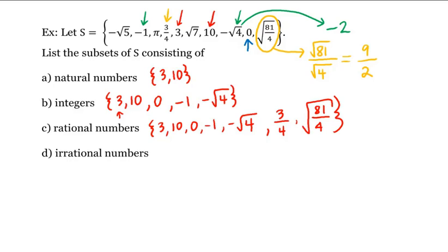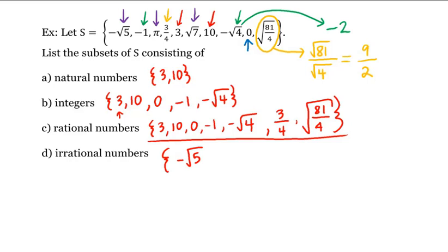Finally, the irrational numbers are any numbers in S that are not in the rational set — namely, negative square root of 5, pi, and square root of 7. So our irrationals are negative square root of 5, pi, and square root of 7. And this is how we classify real numbers into these subsets. Thank you, and we'll see you next time.